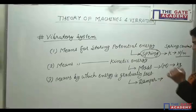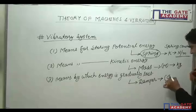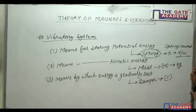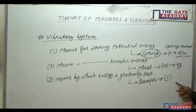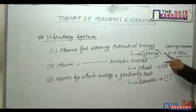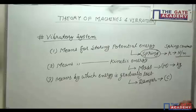The damping constant is represented by c. I will give the unit details later — for now, m, k, and c are the three fundamental quantities you will see in each and every vibratory system.